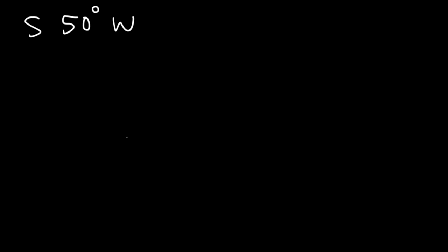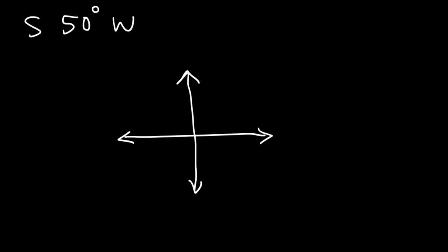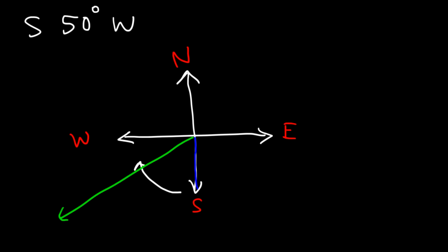Draw this one: south 50 degrees west. Feel free to pause the video. So we have north, south, east, west. We're going to start with the south line, and then travel 50 degrees from that line towards the west. The bearing is in this direction, and here's the angle of 50 degrees. That's how you can draw it.